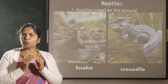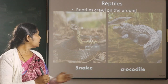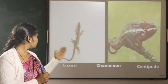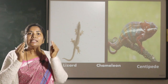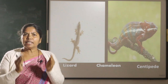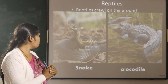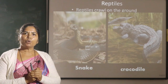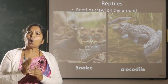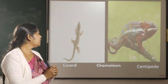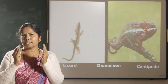Now let us move to reptiles. Snake, crocodile, lizards, chameleon — these are the reptiles. These crawl on the ground. Some of the reptiles have no legs. Some of the reptiles have short legs. These reptiles are very, very dangerous creatures.